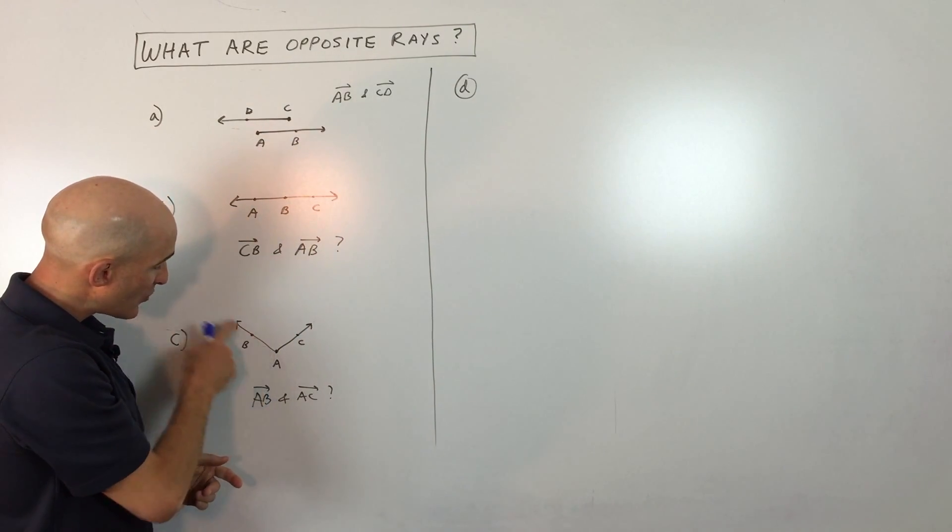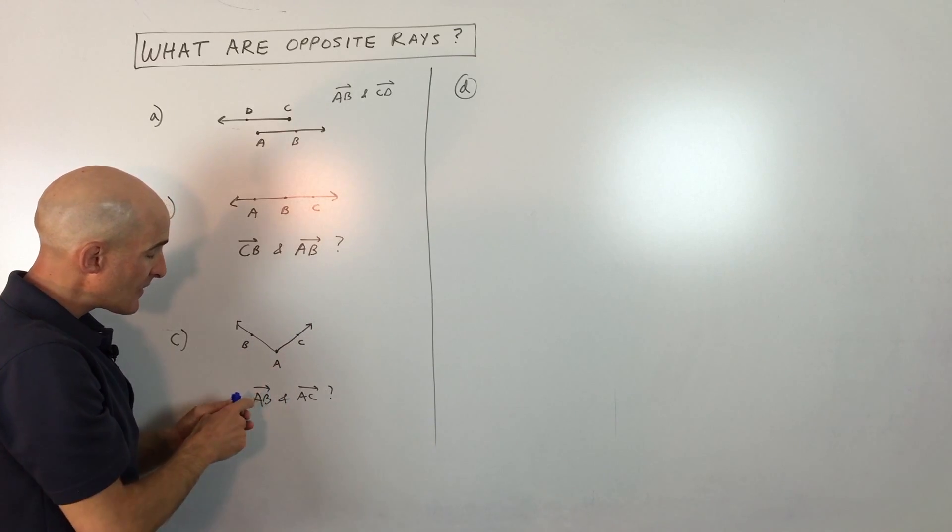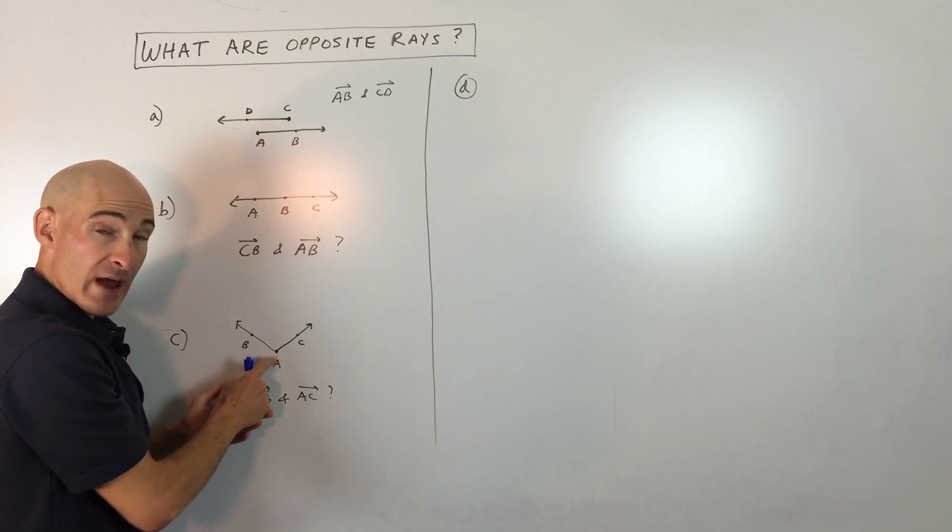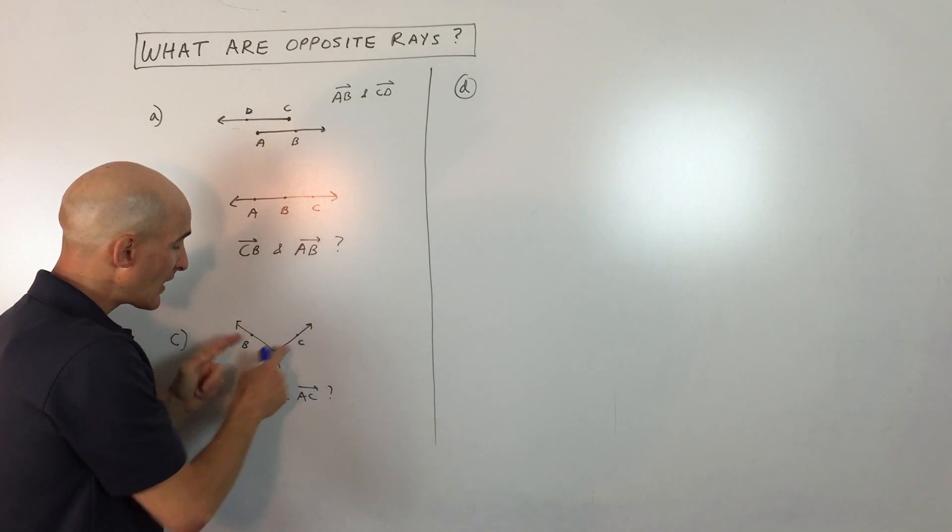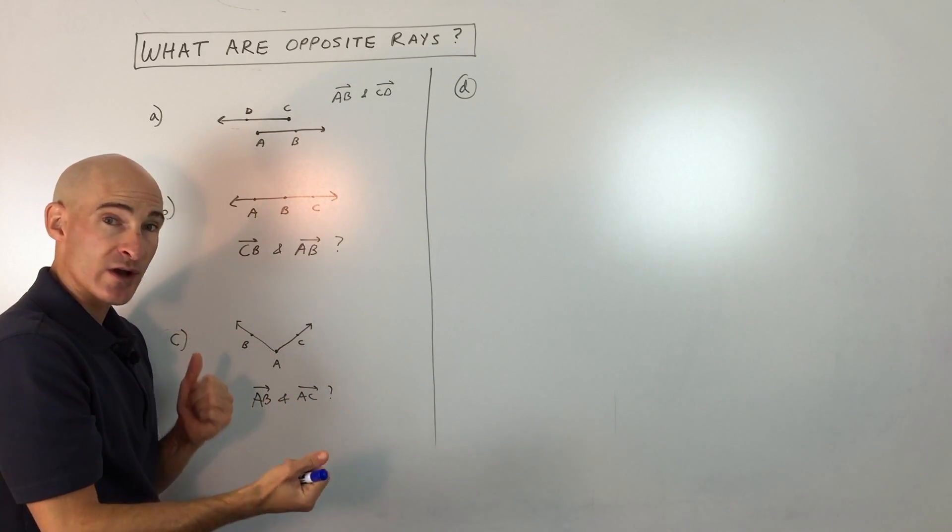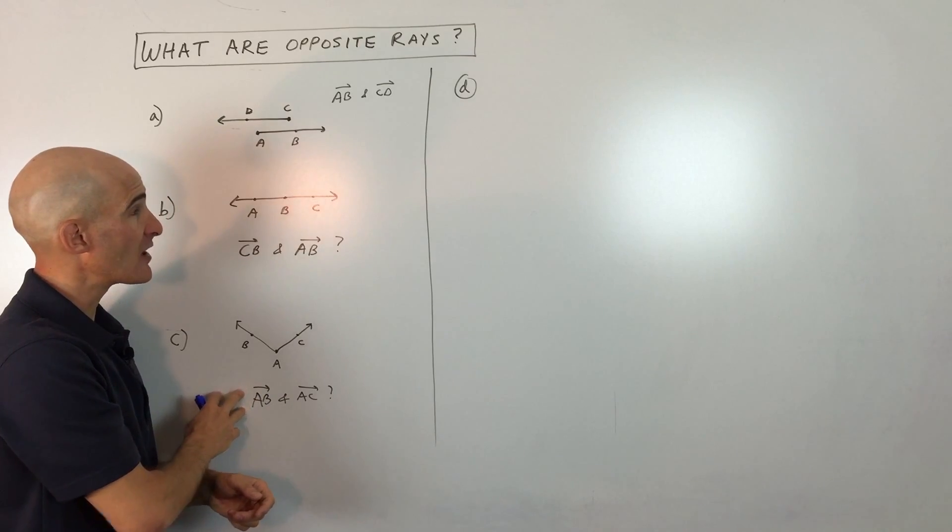Letter C, you can see here's ray AB and here's ray AC. Notice they both have that same starting point, which is called the endpoint, but they're not going at 180 degrees opposite to one another. So these are also not opposite rays.